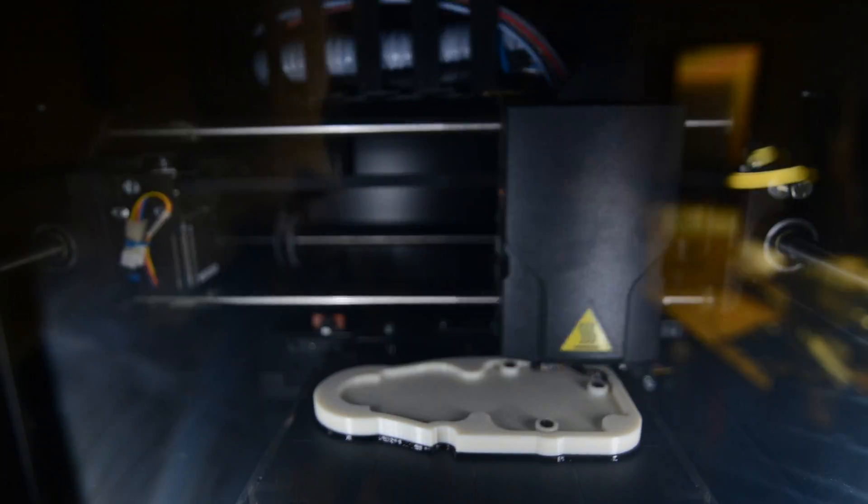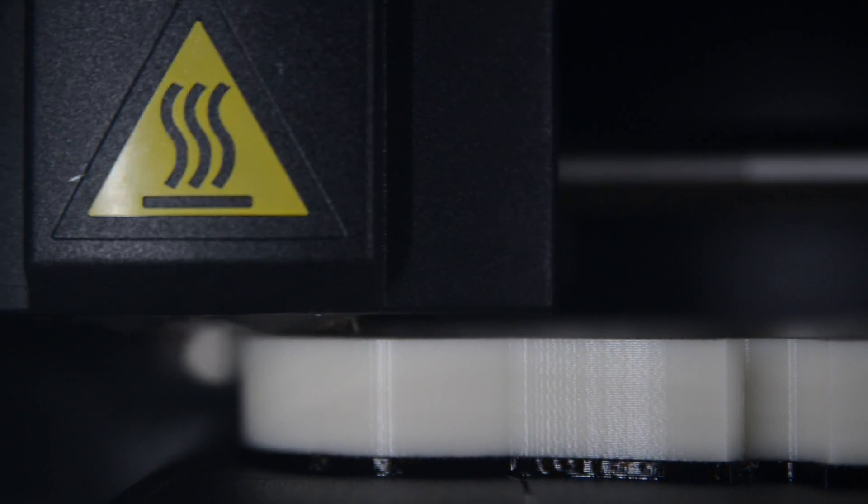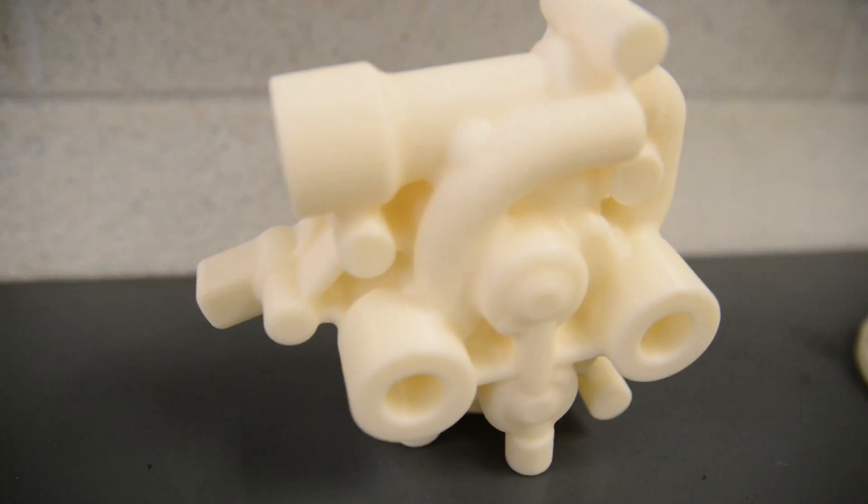Some of the earlier additive manufacturing processes were strictly plastics and the parts that came out of those processes were great for ergonomic design, fit design, but they weren't very strong.